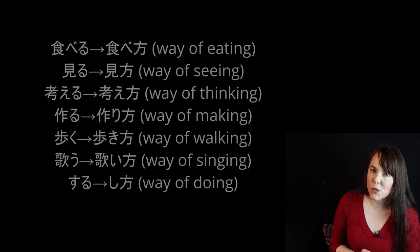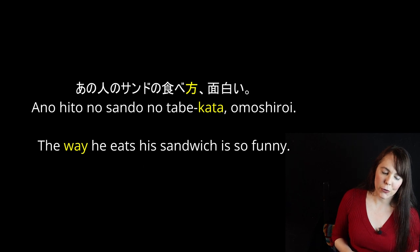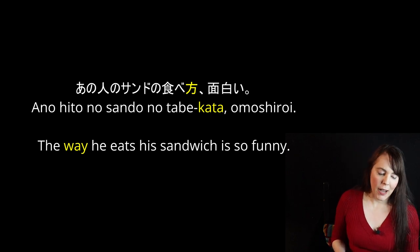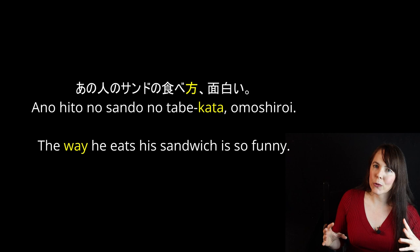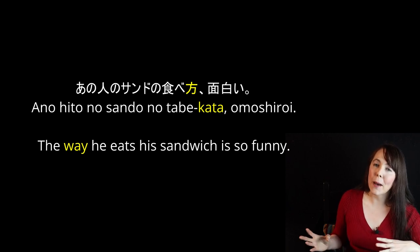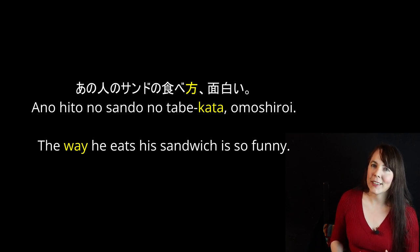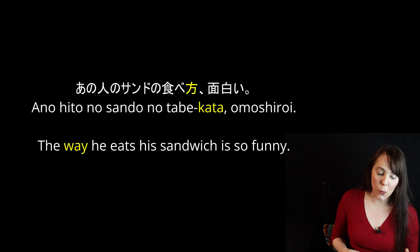Here are some sentences with kata verbs. 'Ano shito no sandou no tabekata, omoshiroi.' So tabekata is the way of eating. Ano shito no sandou no tabekata — sandou no tabekata is the way of eating a sandwich. Ano shito no — that person's way of eating a sandwich. Omoshiroi — funny, interesting. So: the way he eats his sandwich is so funny.